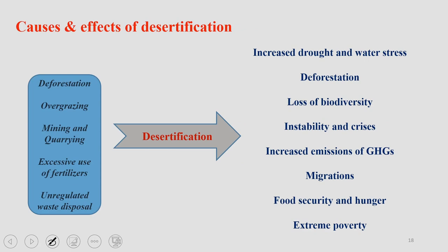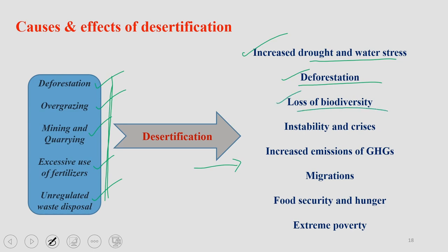Before we go into management of this big problem, we need to know the main causes of desertification: deforestation, overgrazing, mining and quarrying, excessive use of fertilizers, and unregulated waste disposal. Desertification also sometimes results from de-vegetation and deforestation due to livelihood activities, leading to depletion of groundwater and increased salinization. Desertification leads to increased drought and water stress, further deforestation, loss of biodiversity, instability and crisis, and impacts various social dynamics.